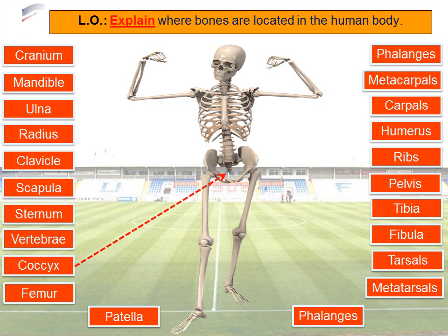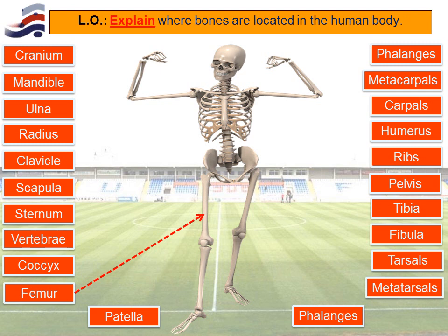The coccyx is quite a prehistoric bone located at the base of the vertebrae, behind us. The femur is the largest bone in the human body and is located in the top part of your leg. Interestingly, the femur being the largest bone, the smallest bone is found in your ear. The patella, often referred to by everybody as the kneecap — that's the patella.